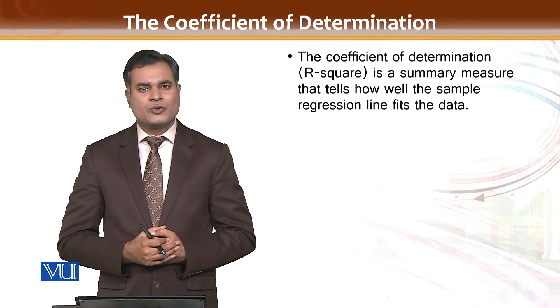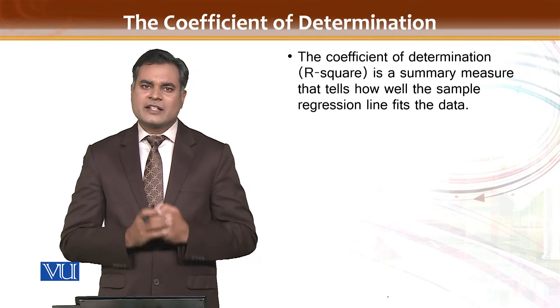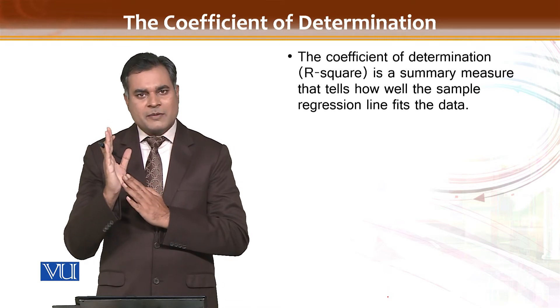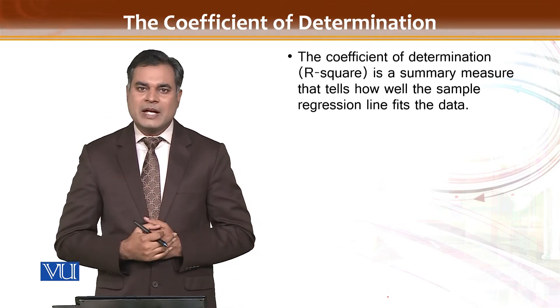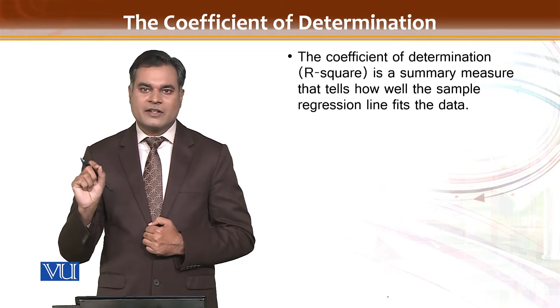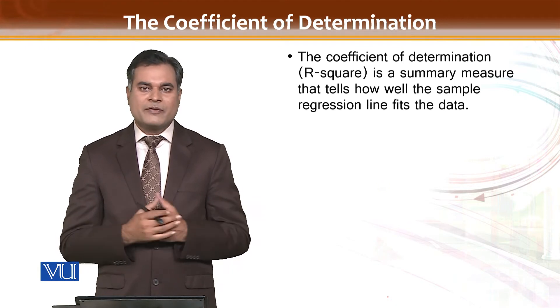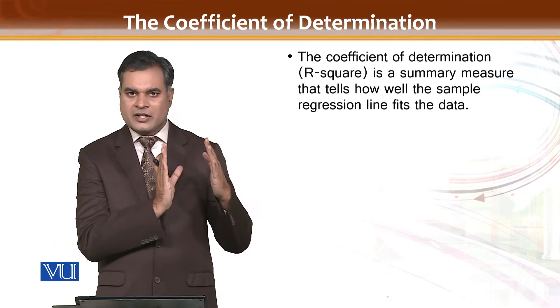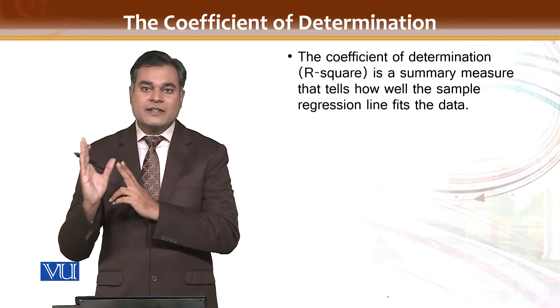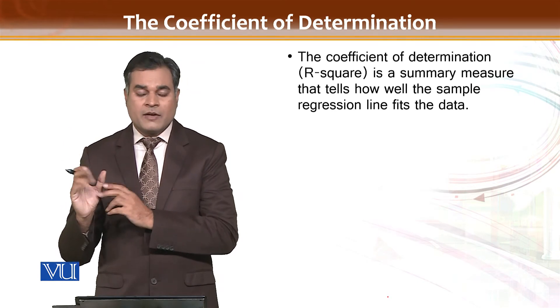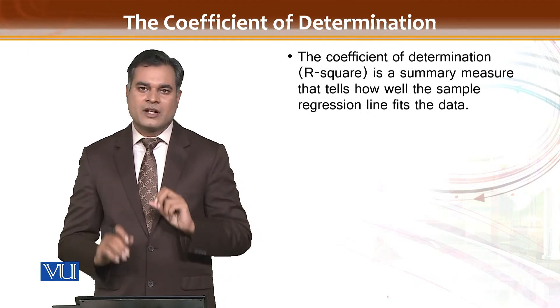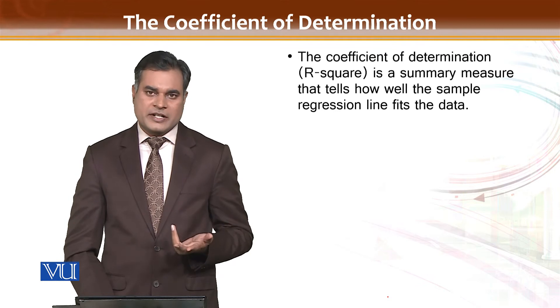If your R square is equal to 0.7, it means 70% changes in dependent variable are because of independent variable and 30% changes are not explained in the model. As I mentioned before, your total sum of square is equal to explained sum of square plus residual sum of square. If your total variation is 100 and R square is 70, it means 70 is your explained sum of square and 30 is your residual sum of square, so 30 plus 70 equals 100. TSS equals ESS plus RSS.